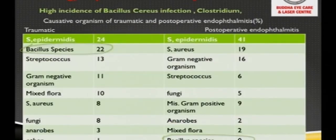So far as microbiology is concerned, there is an entirely different scenario in case of traumatic versus post-operative endophthalmitis. In traumatic cases, Bacillus species is much more common, whereas in post-operative endophthalmitis there is no incidence of Bacillus endophthalmitis. High incidence of Bacillus cereus infection and Clostridia are noted in cases of trauma.